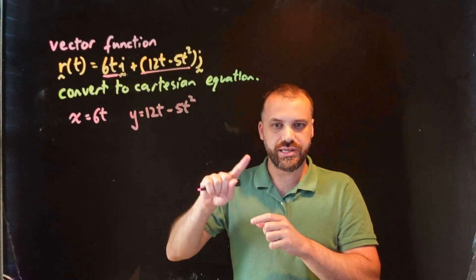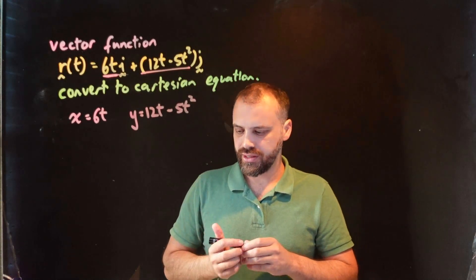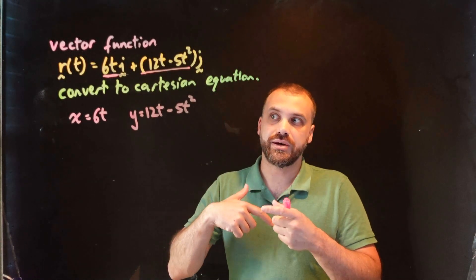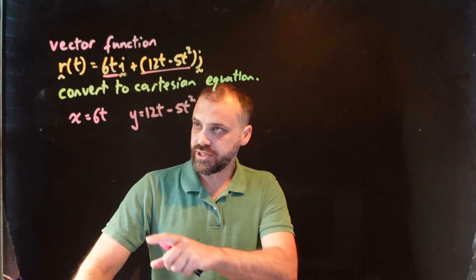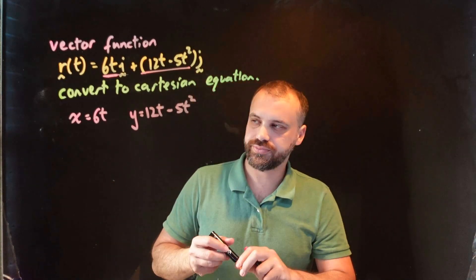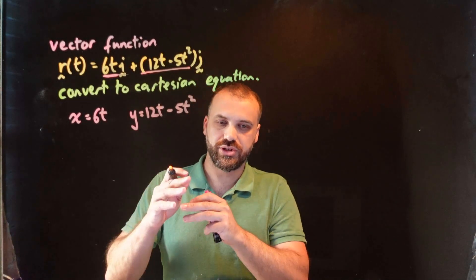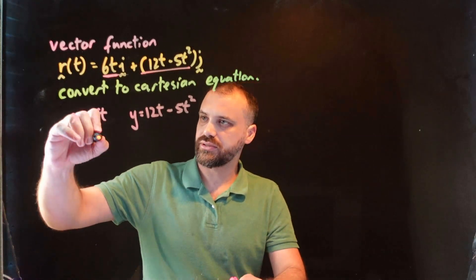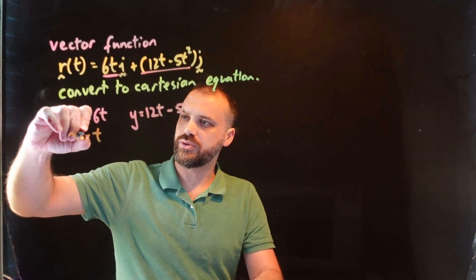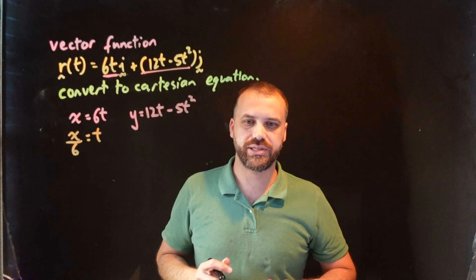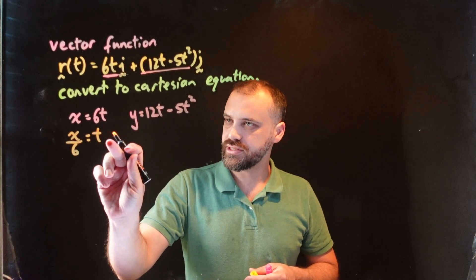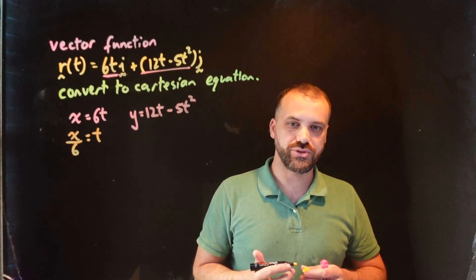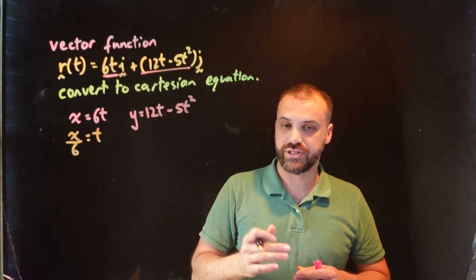Now, generally, you want to sub the simpler equation into the more complicated equation. So, I'm going to take this equation here and rewrite it so that t equals something. t equals x divided by 6. Alright?